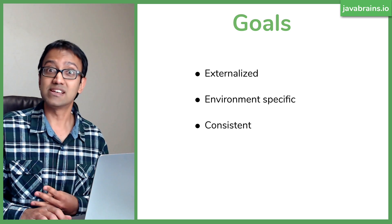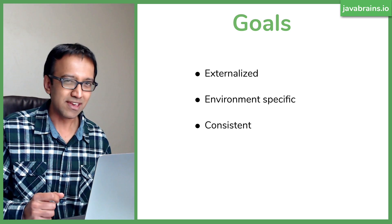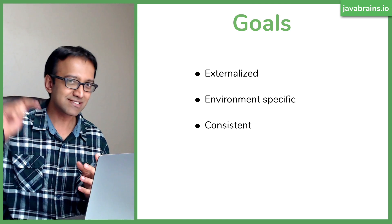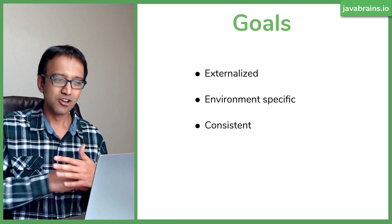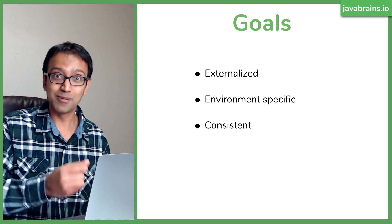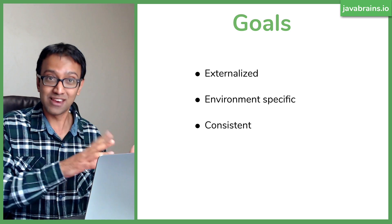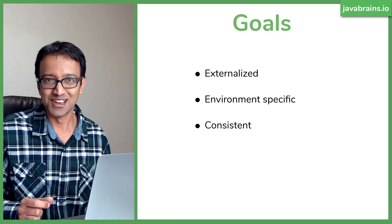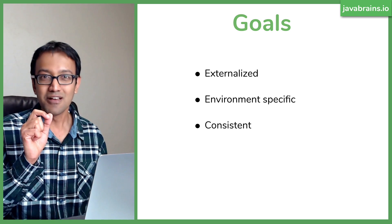The third goal: configuration needs to be consistent. If you have 10 instances of a microservice running, you don't want nine looking at one value and the tenth at a slightly older value. You want configuration values to be consistent across all instances — and you need control over it if you ever want to make them differ.